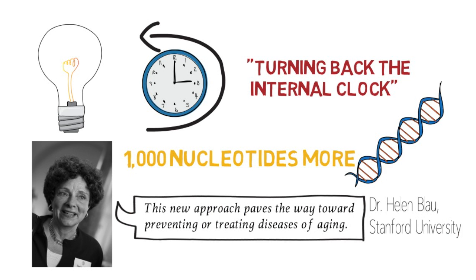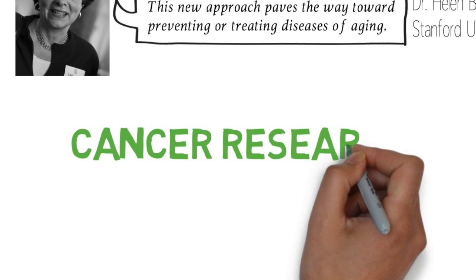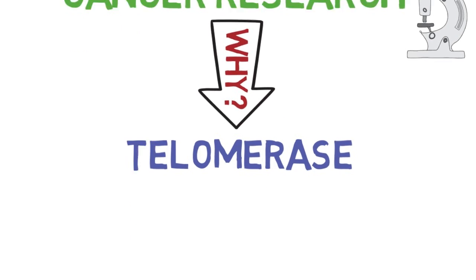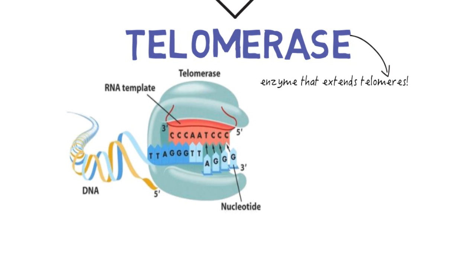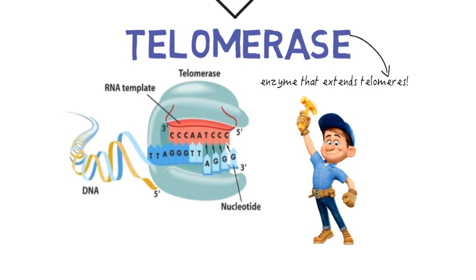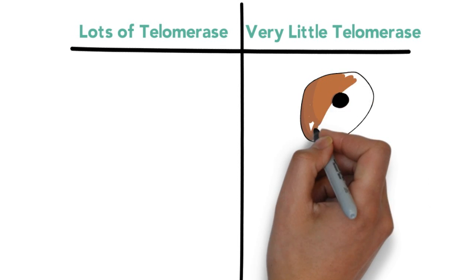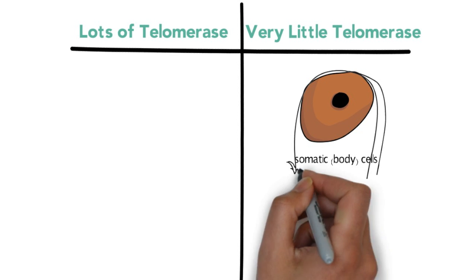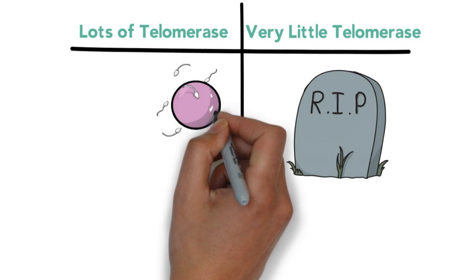Another huge application of telomeres is in cancer research. Why? Here's the thing. There's a special enzyme called telomerase that extends telomeres. A typical somatic, or body cell, has very little telomerase, so they eventually die. What has a lot? Germ cells. Sperm and egg.